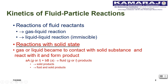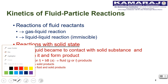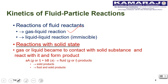We have already discussed gas-liquid and liquid-liquid immiscible reaction systems, where reactions occur in the fluid phase. In the case of reactions with a solid state, the fluid comes into contact with the solid substance and reacts with it to form a product. The more general expression is: A of fluid reacts with B of solid to give a fluid product or fluid and solid products.